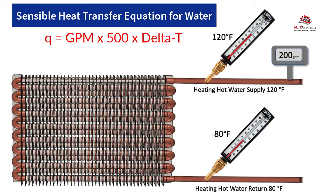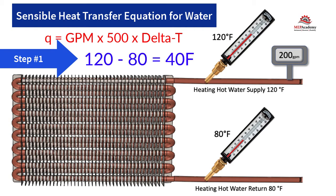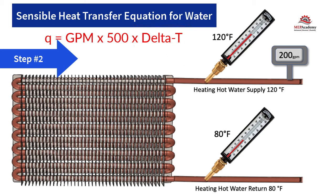Step one is to subtract the leaving water temperature of 80°F from the entering water temperature of 120°F to arrive at the temperature difference, or Delta T. 120 minus 80 Fahrenheit gives us a 40 degree Delta T.